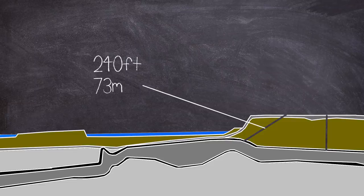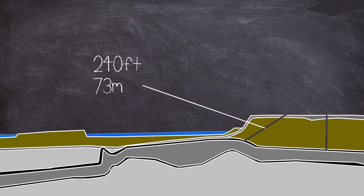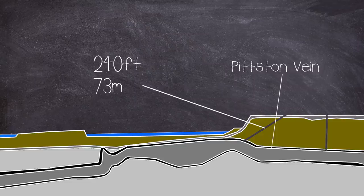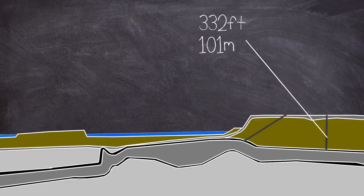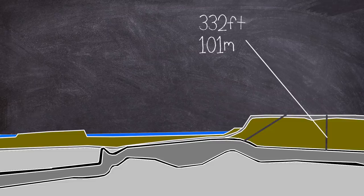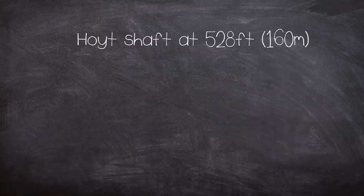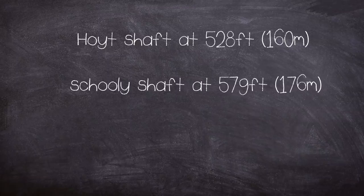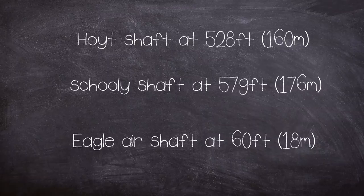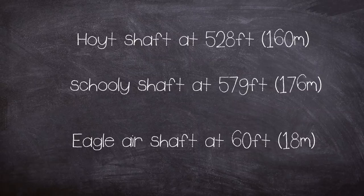The Riverslope was dug into the ground 240 feet long at an angle of around 25 degrees where it intersected the Pittston vein. The May Shaft was 332 feet deep and the other three emergency shafts were the Holt Shaft at 528 feet deep, the Schooley Shaft at 579 feet and the Eagle Air Shaft at just 60 feet.